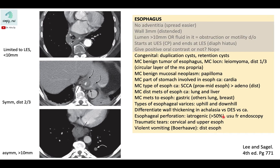Esophageal perforation is most commonly iatrogenic, due to endoscopy. Traumatic tears are more common in the cervical and upper esophagus, while violent vomiting — Boerhaave syndrome — is seen more in the distal esophagus.